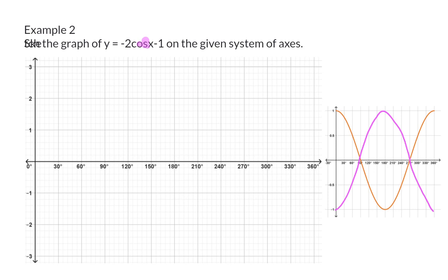And the 2 shows us that the amplitude has now doubled. This means that our maximum is now 2 and our minimum minus 2.